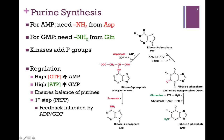Now that we have our intermediate IMP, we use it to build both purines, AMP and GMP. On the left, we have the formation of AMP, which requires the amino acid aspartate. Comparing AMP with IMP, we replace a carbonyl with an amine from aspartate. In the first step, we add the entire aspartate amino acid, requiring hydrolysis of GTP. Then we retain the amine group and fumarate is released, giving us AMP.